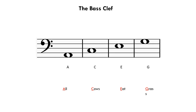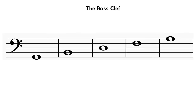Now we can work out the notes for the lines. This is what the notes look like when it's just the lines. The first note from the bottom is G, then B, then D, then F, and then we have A. A phrase that you can use to remember the order is 'Good Boys Do Fine Always.' This is just another example so feel free to change it.